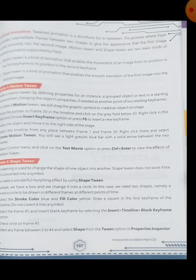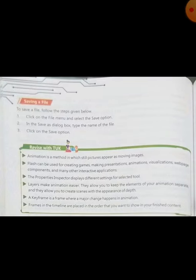The next topic is saving a file. After creating, we can save the file by following these steps: click on the File menu and select the Save option. In the Save As dialog box, type the name of the file and then click Save. Just like saving other documents, we can save our animation using these steps.